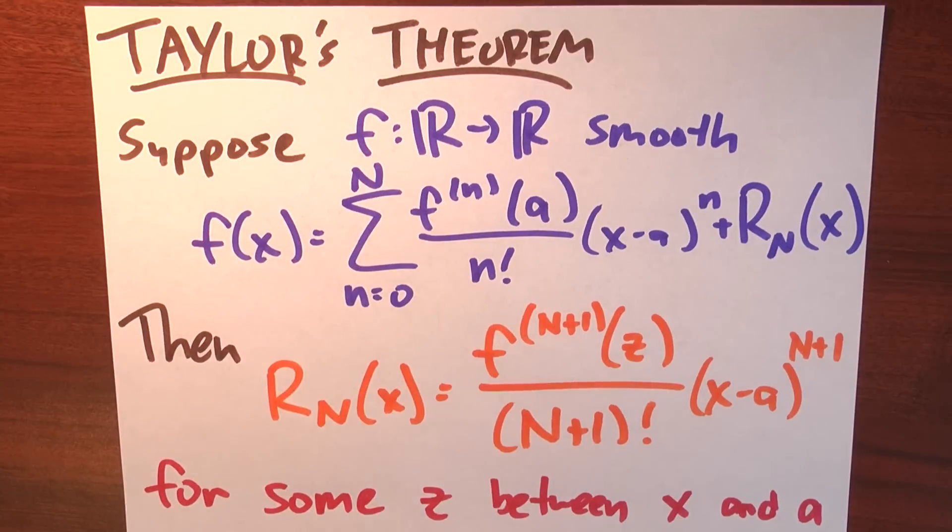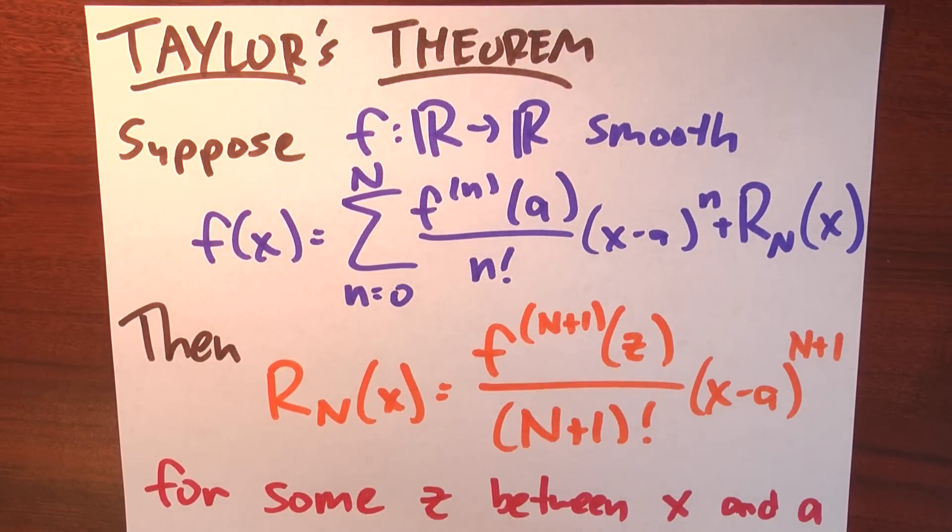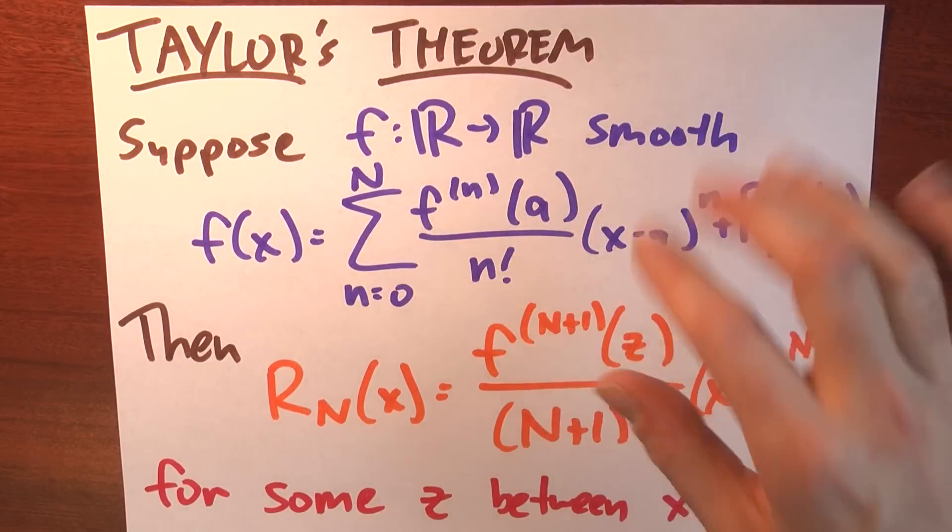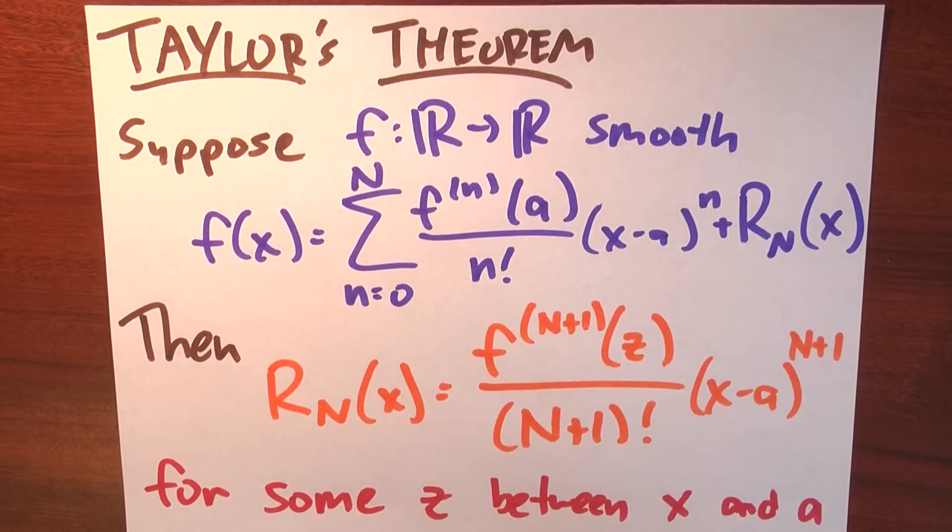Well, let's remember what Taylor's theorem says. Suppose that you've got some function f, takes real inputs, produces real outputs, and I'm just going to assume it's smooth. I don't want to worry too much about the exact differentiability conditions that I need.